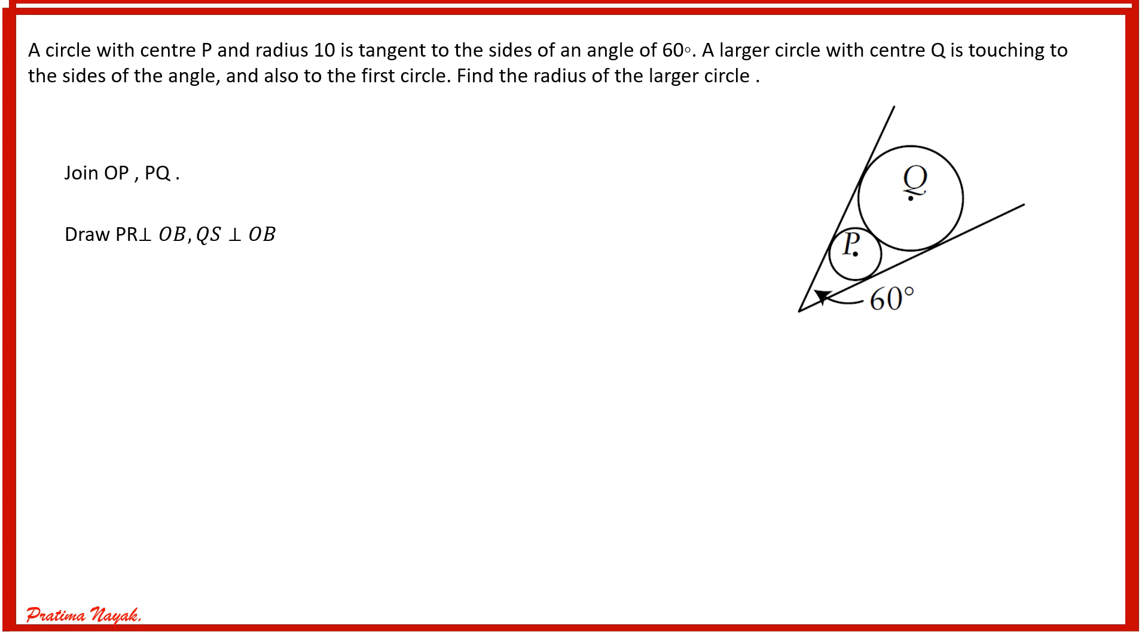The question is: a circle with center P and radius 10 is tangent to the sides of an angle of 60 degrees. Here is an angle making 60 degrees which is tangent to this circle P, the smaller circle. A larger circle with center Q is also tangent to the sides of the angle. That means these two sides OA and OB are also tangent to circle Q.